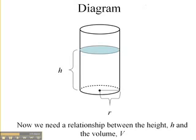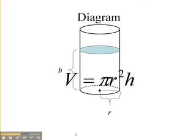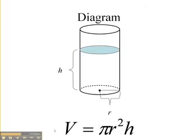Now what we'd like to do is find a relationship between the height h, which is changing, and the volume V, which is also changing. So the volume of a cylinder is pi r squared h, and so this is going to be the relationship between our variables. So we're going to use that to find the relationship between our rates.